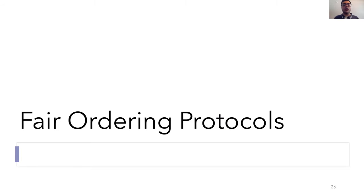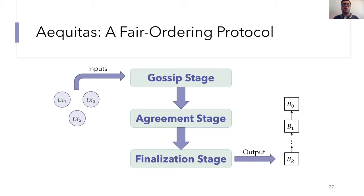Okay, so let me now talk a little bit about our actual fair ordering protocols. We describe our protocol Aequitas, which is named after the Roman personification for fairness. Broadly, the Aequitas protocol will take place in three stages: the gossip stage, the agreement stage, and the finalization stage. And the transactions that are input into the system will go through each of these three stages before finally being delivered as part of the blockchain. In the next several slides, I'll go through the key ideas for each one of these three stages.